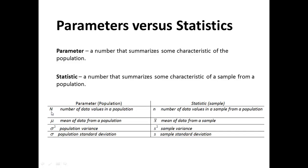We use capital N to represent the number of data values in a population of data, and lowercase n to represent the number of data values in a sample from a population. The Greek letter mu is used to represent the mean of the population, whereas x-bar is used to represent the mean of a sample from the population.